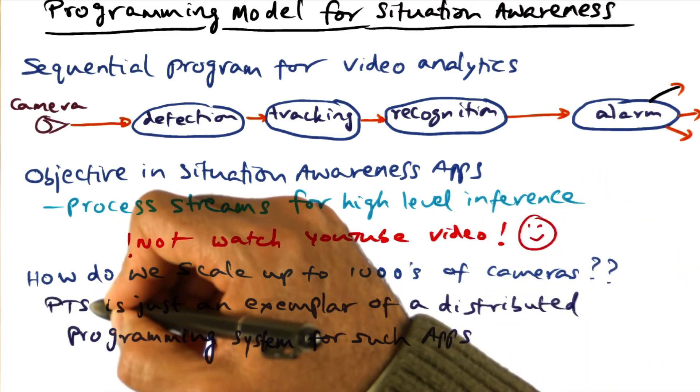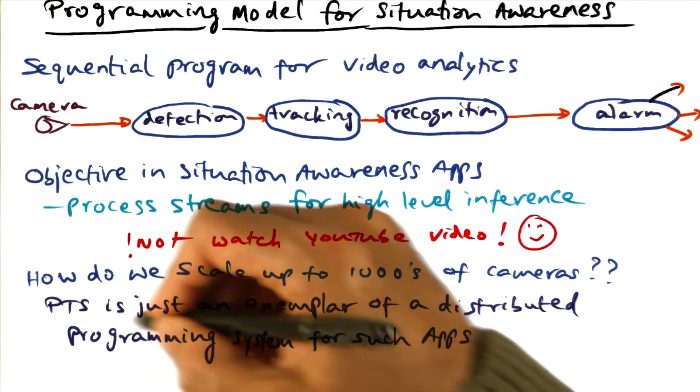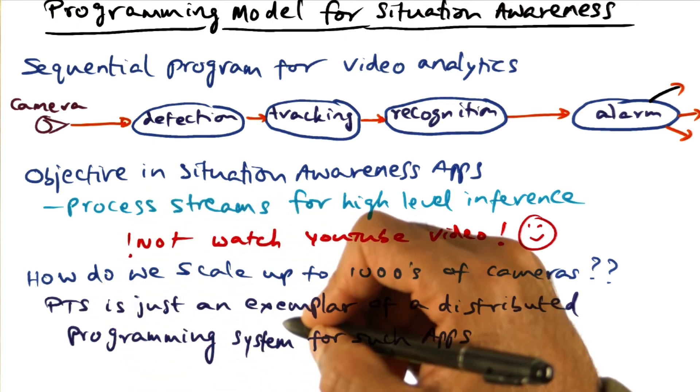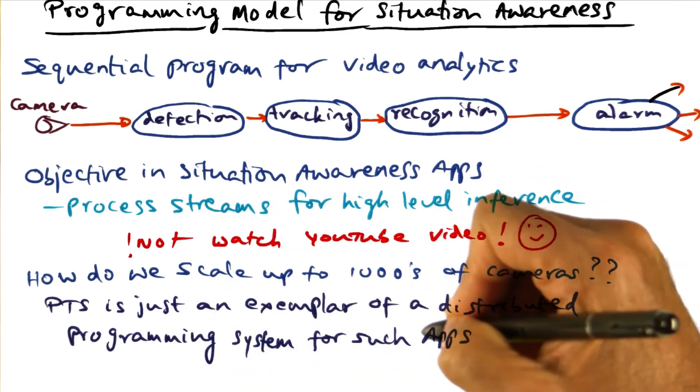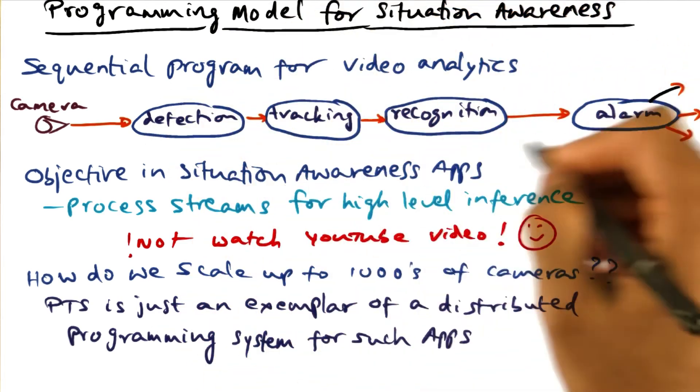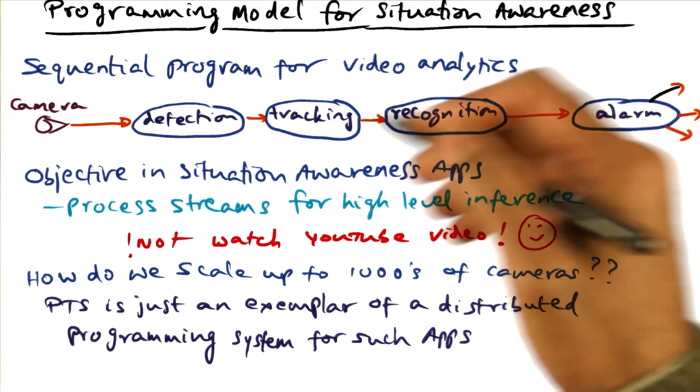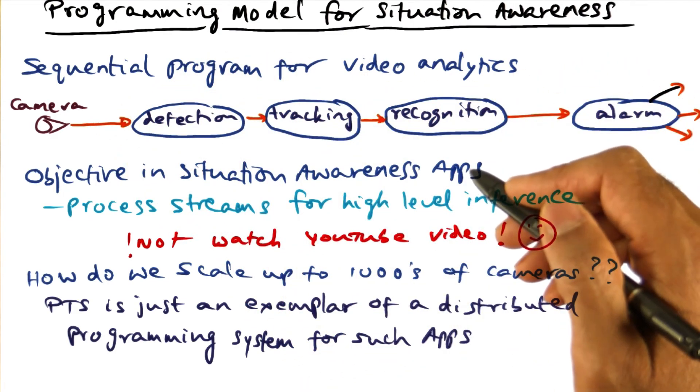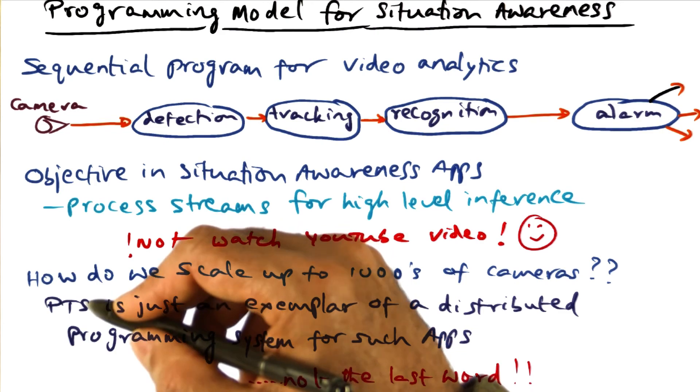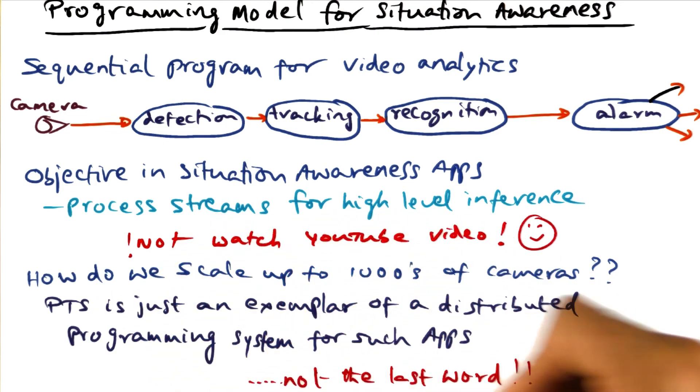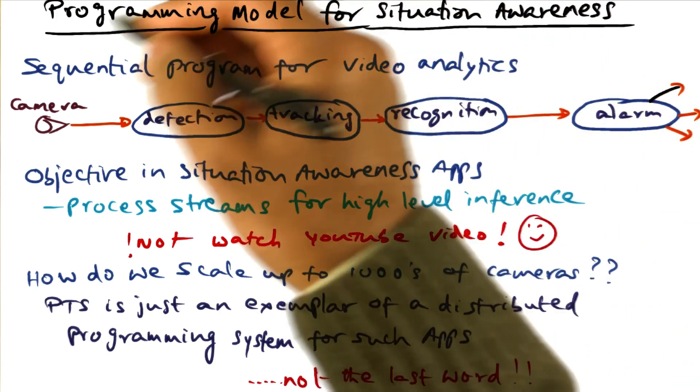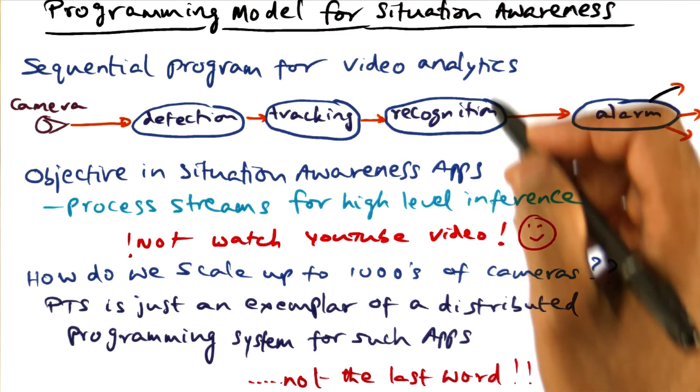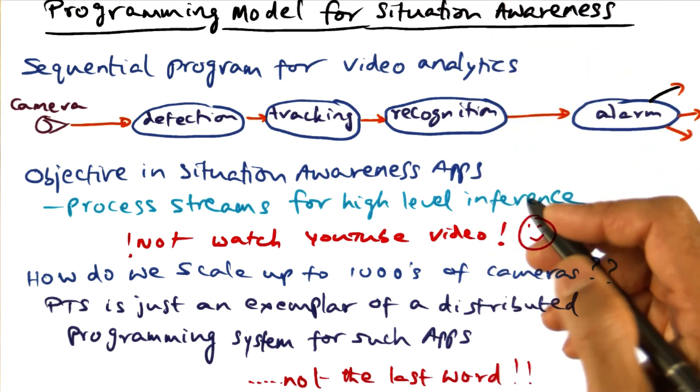Persistent temporal streams, which is the focal point of this particular lesson, is just one exemplar of a distributed programming system for catering to the needs of situation awareness applications, such as what I described to you just now. I want to stress the fact that PTS is just an exemplar, not the last word. But it is good to look at one concrete example of a distributed programming system that can help reduce the pain points in developing situation awareness applications.